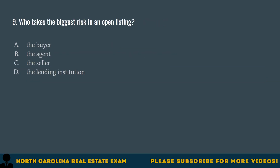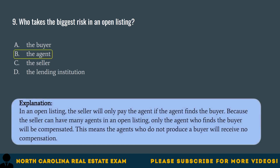Question 9. Who takes the biggest risk in an open listing? A. The buyer. B. The agent. C. The seller. D. The lending institution. The correct answer is B. The agent. In an open listing, the seller will only pay the agent if the agent finds the buyer. Because the seller can have many agents in an open listing, only the agent who finds the buyer will be compensated. This means the agents who do not produce a buyer will receive no compensation.